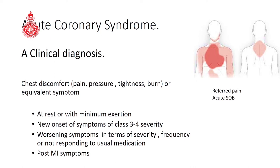Pain may be felt not only in the chest but anywhere from below the jaw line down to the umbilical level, including the front and back of the chest and both arms. Other chest pain equivalents include breathing difficulty and profuse sweating with nausea as sole symptoms. In fact, typical chest pain is experienced by only about 30% of patients. If symptoms occur at rest, with minimal exertion, or represent new-onset class 3 or 4 severity, worsening in severity or frequency, not responding to usual medication, or are post-MI symptoms, you are likely dealing with acute coronary syndrome.